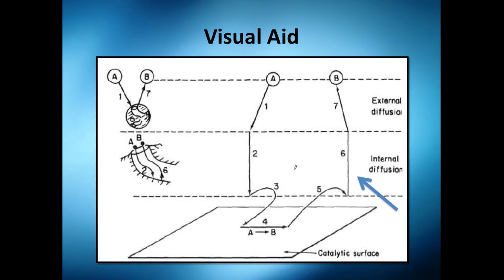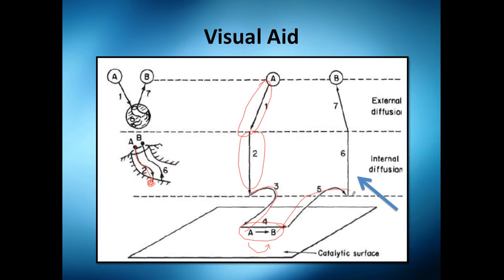We are seeing external diffusion of the reactant, internal diffusion of the reactant, absorption of the reactant, reaction of that reactant into B, and desorption of B which is our product. Now we just need to take out — we are right now here — we want to take out to the surface.